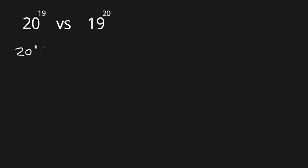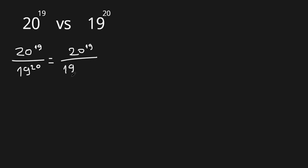Let's consider 20 to the power of 19 over 19 to the power of 20. The denominator, 19 to the power of 20, can be written as 19 to the power of 19 times 19 to the power of 1.